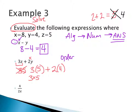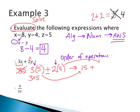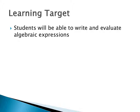Now the algebraic expression is represented as the numerical expression: three times five plus two times four. This brings us back to order of operations. I have both multiplication and addition, so I do multiplication first. Three times five equals fifteen, and two times four equals eight. Now I add: fifteen plus eight equals twenty-three. I have now evaluated this algebraic expression to get a final answer of 23.